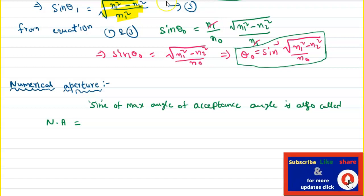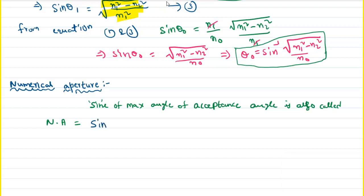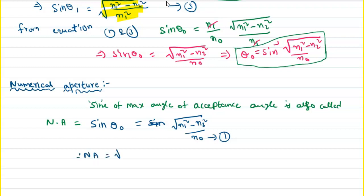The numerical aperture equals the sine of the maximum acceptance angle theta. The formula is: NA = √(N1² − N2²) / N0. Since N0 is the refractive index of air and equals 1, the numerical aperture formula simplifies to: NA = √(N1² − N2²).